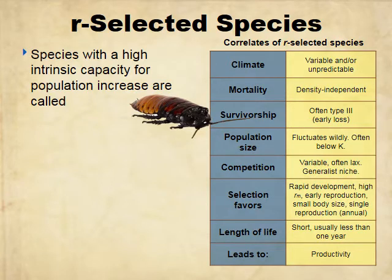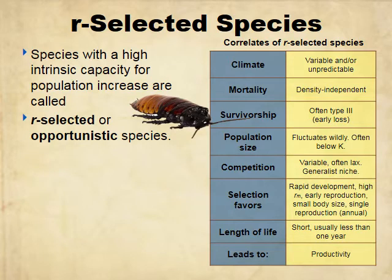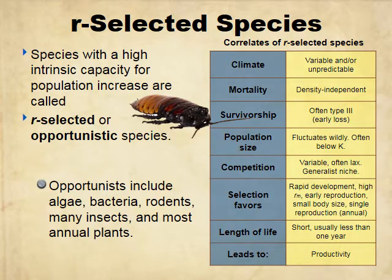R selected species can increase very quickly — they're opportunistic, generalist species. They'll adapt to many areas. Examples include algae, bacteria, rodents, insects, and most annual plants. They can live in many climates, are usually density-independent in terms of mortality, and their population size can fluctuate. They reproduce early, have a smaller body size, shorter gestation time so they can have more and more offspring, and usually short lifespans.